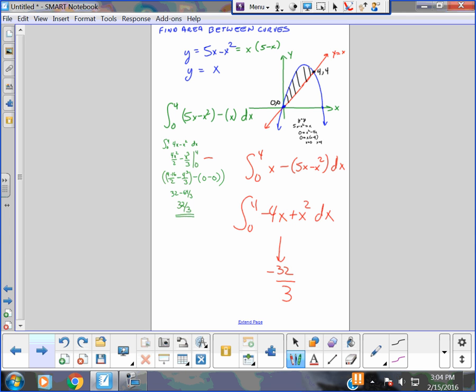Because it's always a top curve minus a bottom curve. And a negative minus a bigger negative, it's only going to be a result of a positive net area. Even when the curves are below the axis.